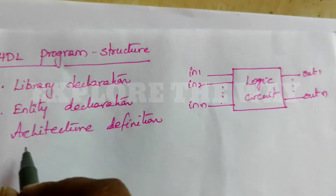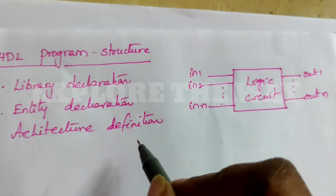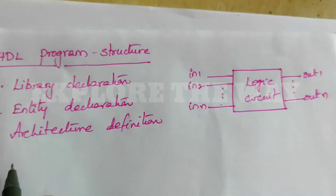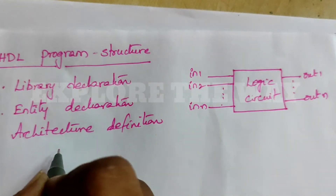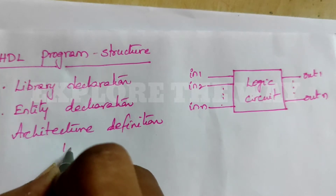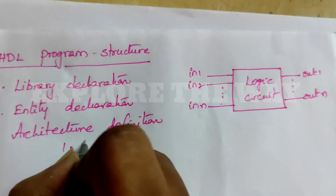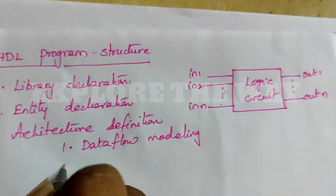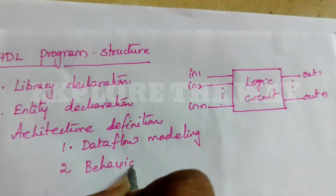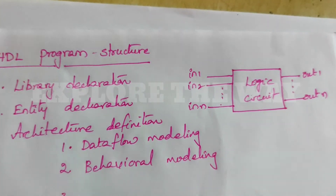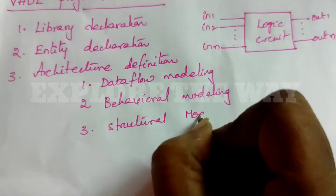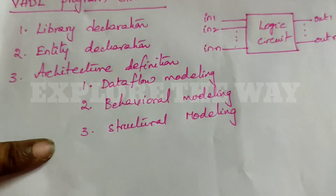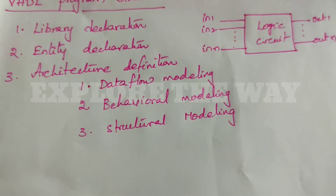The third one is architecture definition. In architecture definition, the internal logic of the logic circuit is described here. The behavior of the logic circuit can be described using any one of three modeling styles: the first is data flow modeling, the second is behavioral modeling, and the third is structural modeling. By using any one of these three modeling styles, we can describe the behavior of a logic circuit.